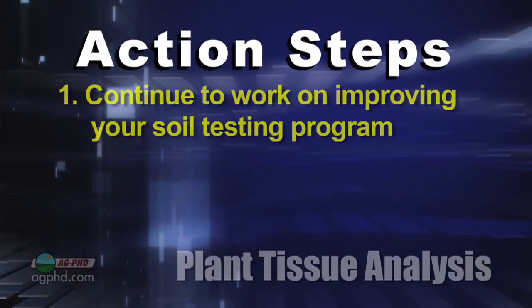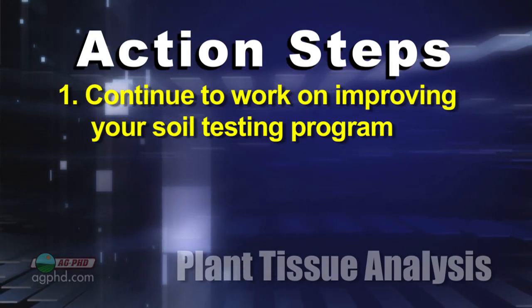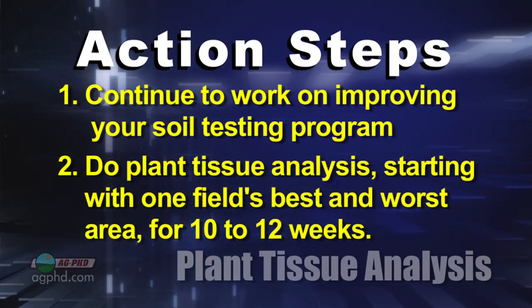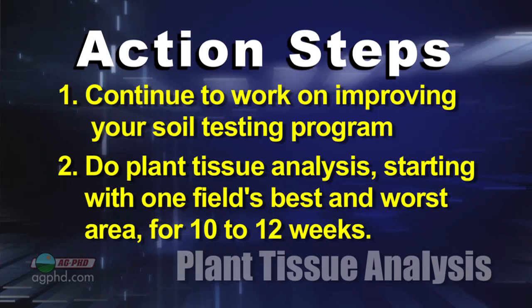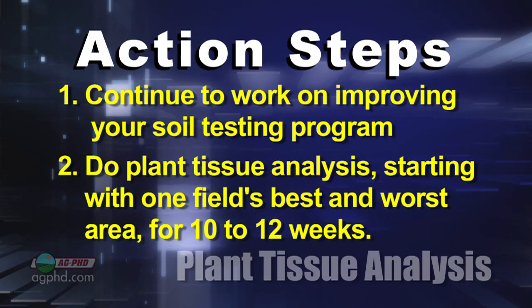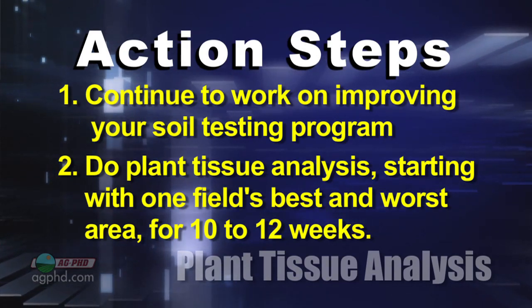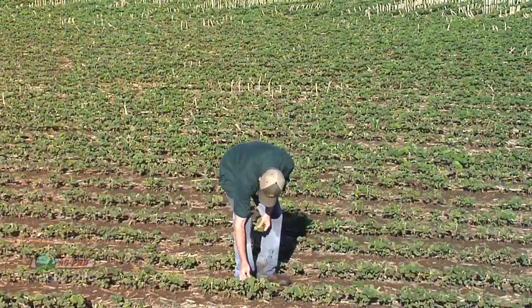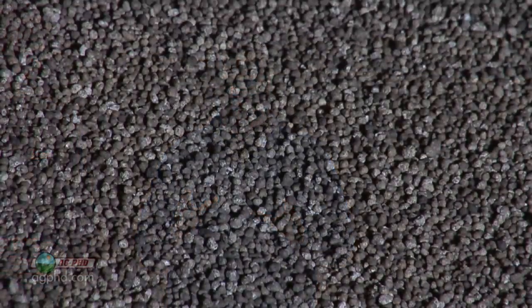Here's exactly what we want you to do: continue doing a good job with soil testing and learn how to read your soil tests. To supplement that, do some plant tissue analysis. You don't have to do every field every year — just get started with one field, mark the best area and the worst area, use a flag or GPS coordinates, and go back to those same two spots every Monday morning for 10 to 12 consecutive weeks. Send the samples in separately, and by the end you'll have great information to change your fertility program for the better and best invest your fertilizer dollar.